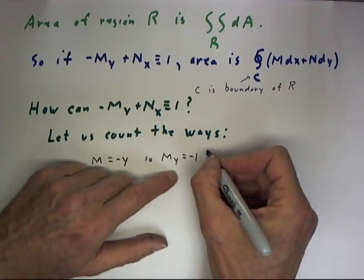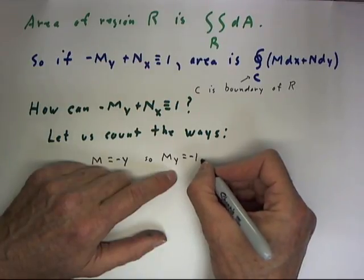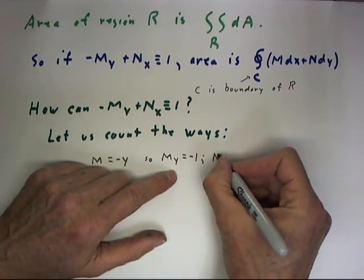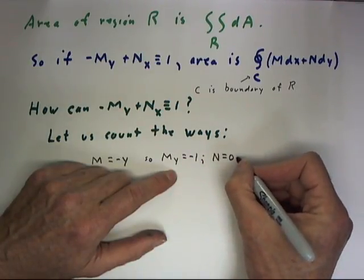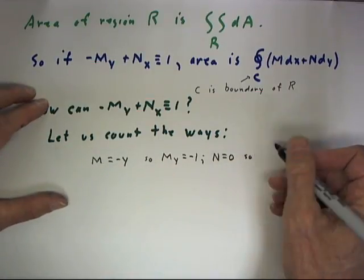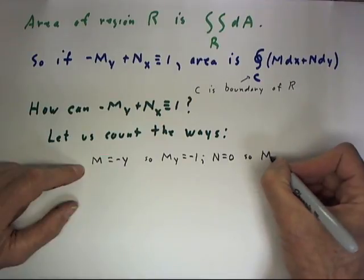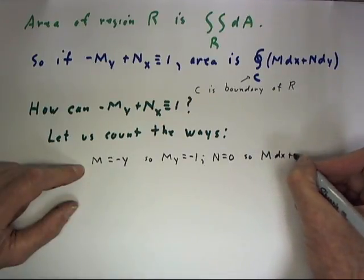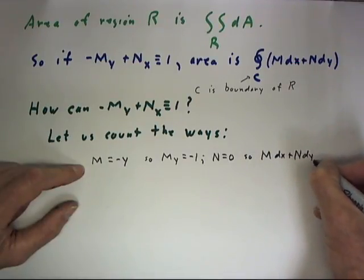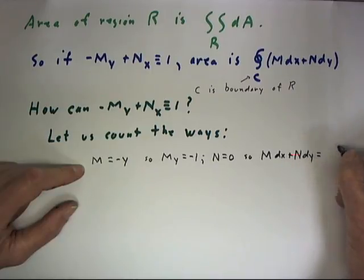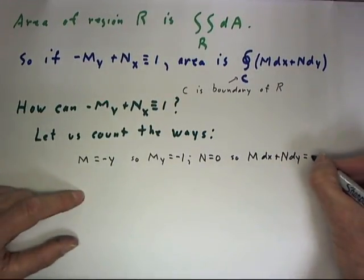So that Mdx + Ndy is just equal to -Ydx.